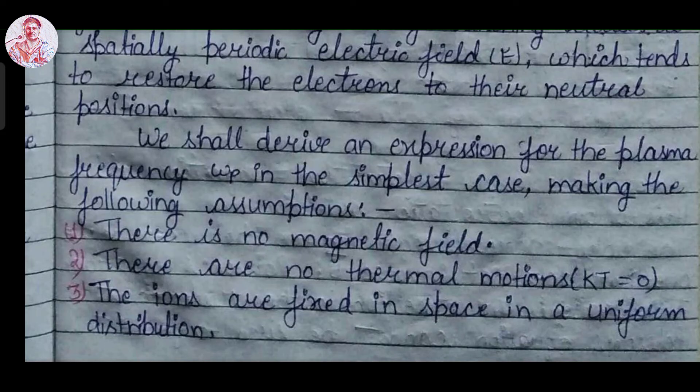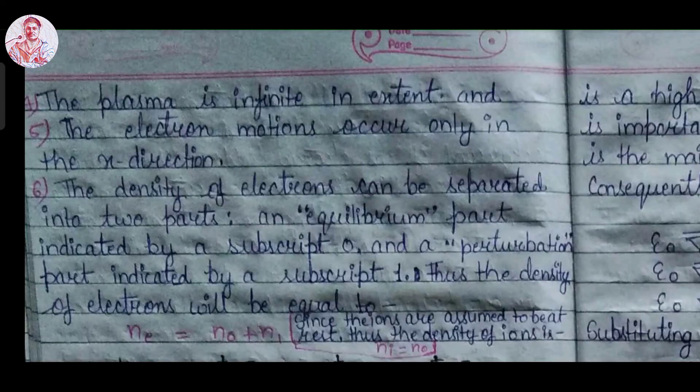Before we derive the expression for the plasma frequency omega_p in the simplest way, we have certain assumptions. First, there is no magnetic field. Second, there is no thermal motion, meaning kT is equal to zero. Third, the ions are fixed in space in a uniform distribution. Fourth, the plasma is infinite in extent, and fifth, the electron motion occurs only in the x direction.